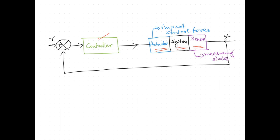What the controller does is it tries to figure out what it can do with y, that is the sensor output, and the reference signal r. Once it gets the values of r and y, it checks the difference and tries to generate the actuating signal. Here comes the importance of controllability and observability: if a system has a proper set of actuators, we say that the system is controllable.